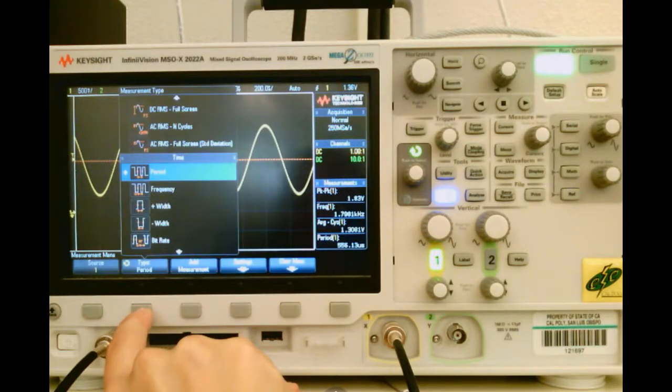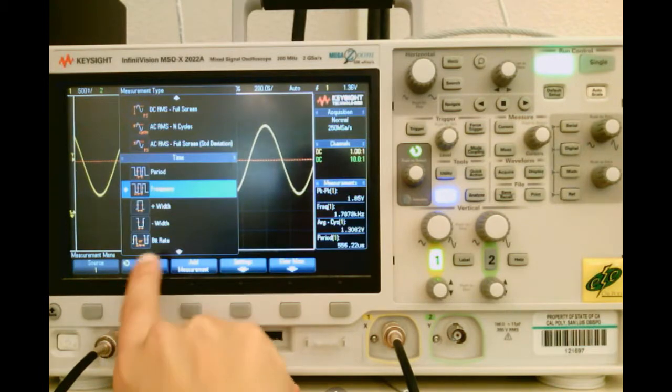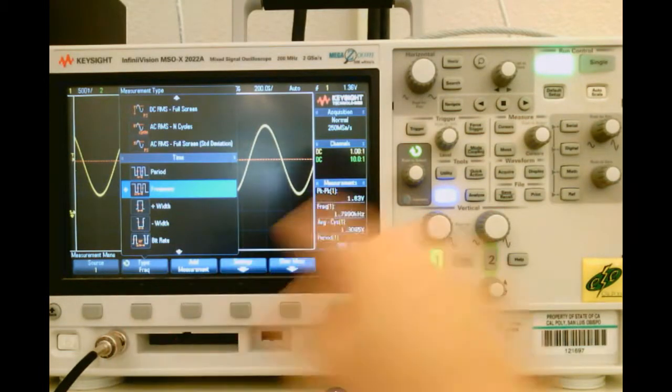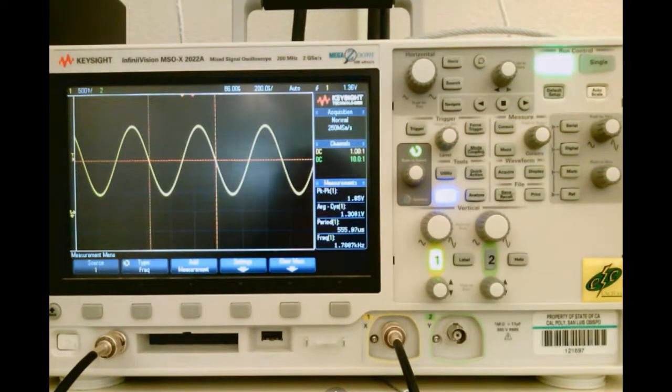Now to get the frequency, we'll just push the type again. Select frequency, push the button to select, and there it is, 1.8 kilohertz.